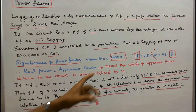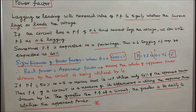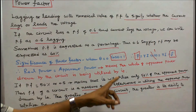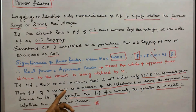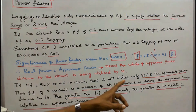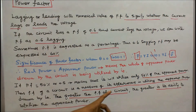When power factor equals 1 (theta = 0), real power P equals apparent power S, meaning the whole of the apparent power drawn by the circuit is being utilized. If the power factor is 50% or 0.5, it will utilize only 50% of the apparent power. Thus, power factor is a measure of a circuit's effectiveness in utilizing the apparent power drawn by it. The greater the power factor, the greater the ability to utilize apparent power.